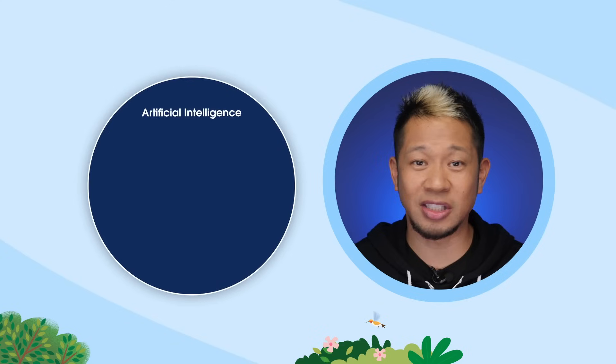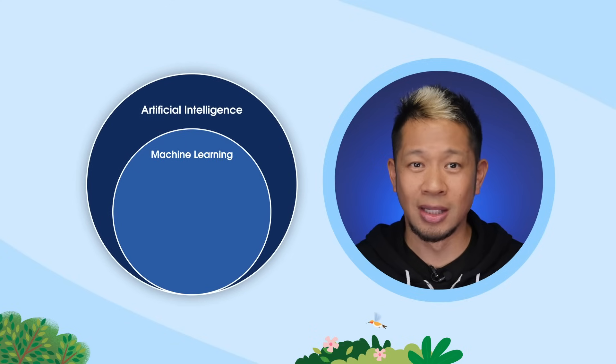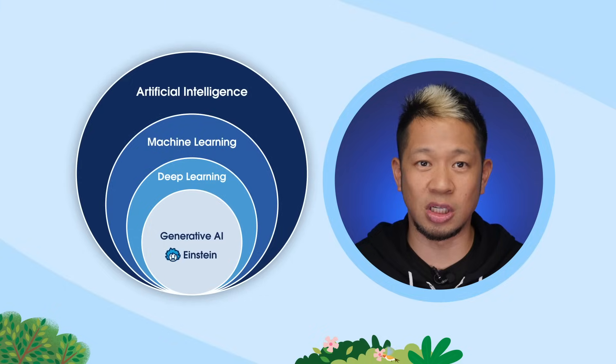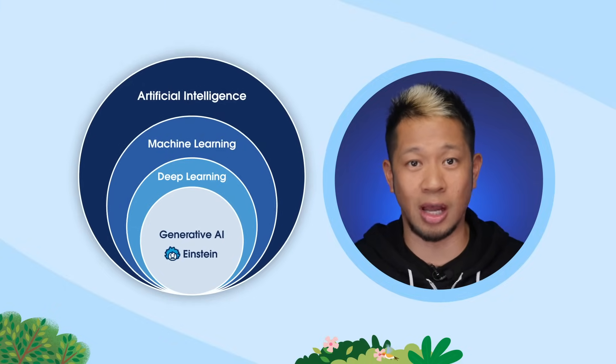Now for the techie part: how does generative AI work? There are a few different ways to develop generative AI models. One of the most popular ways is by using pre-trained large language models, or LLMs, to create new content from text-based prompts. LLMs use machine learning techniques and massive amounts of data sets to fuel an AI. These algorithms make it possible for AI to take in enormous amounts of information, continuously train itself, and understand the relationships between data so it can generate content.